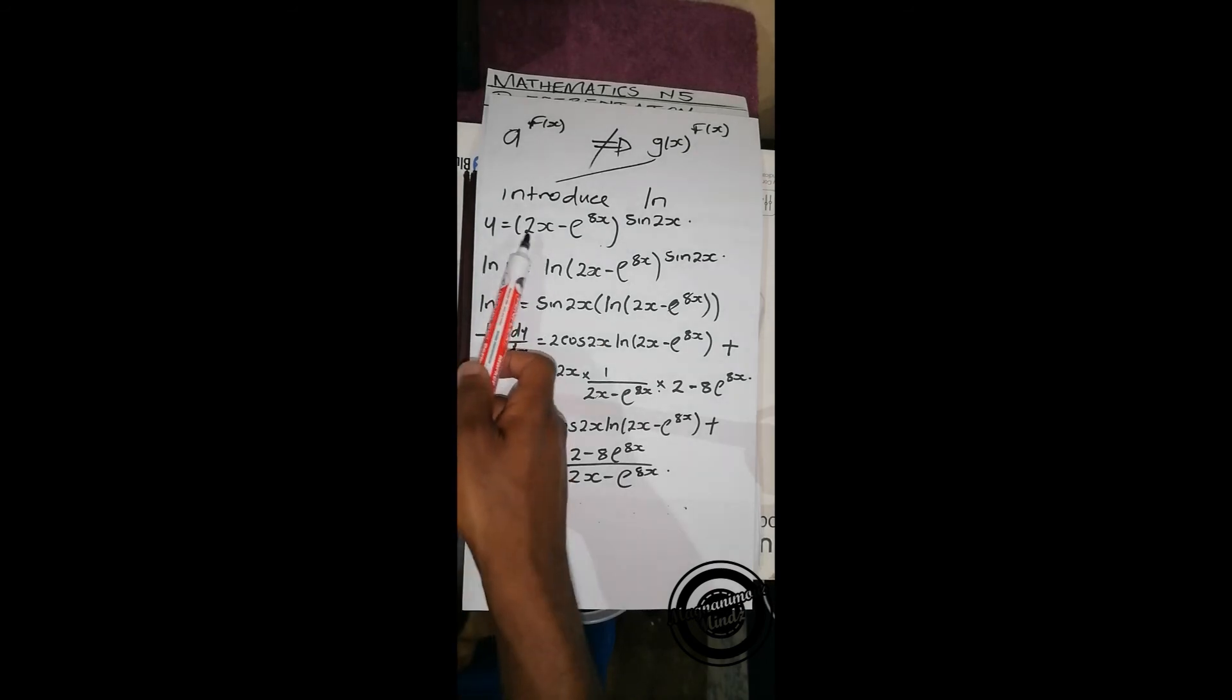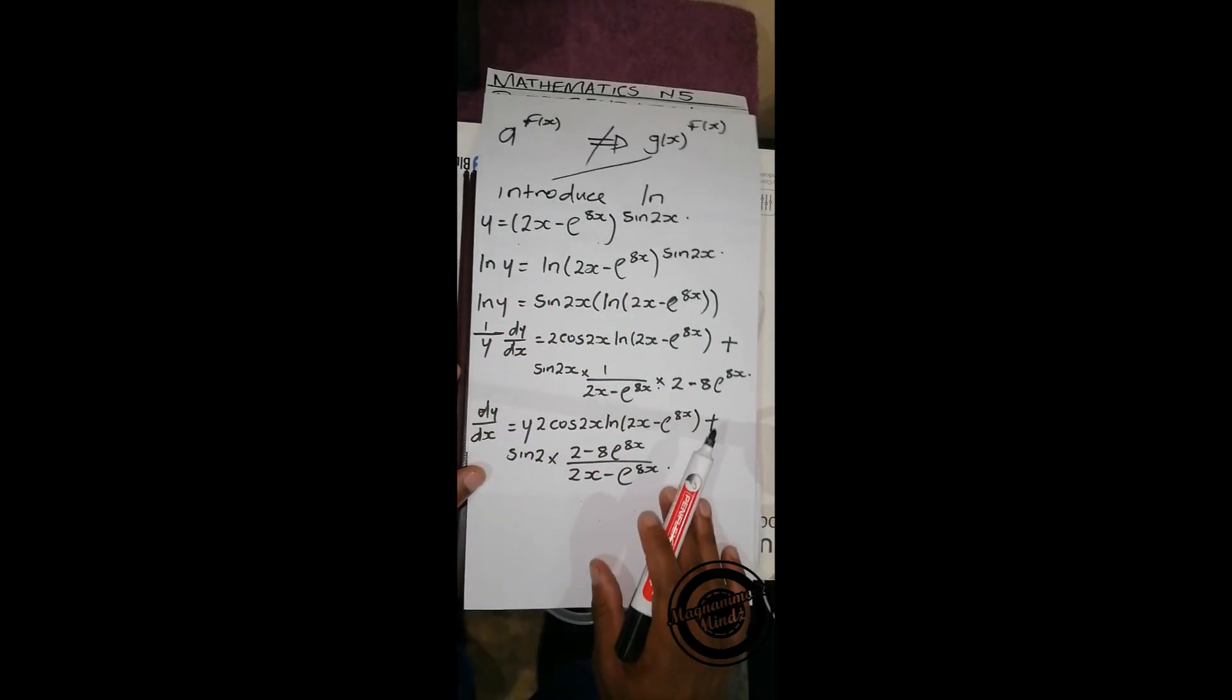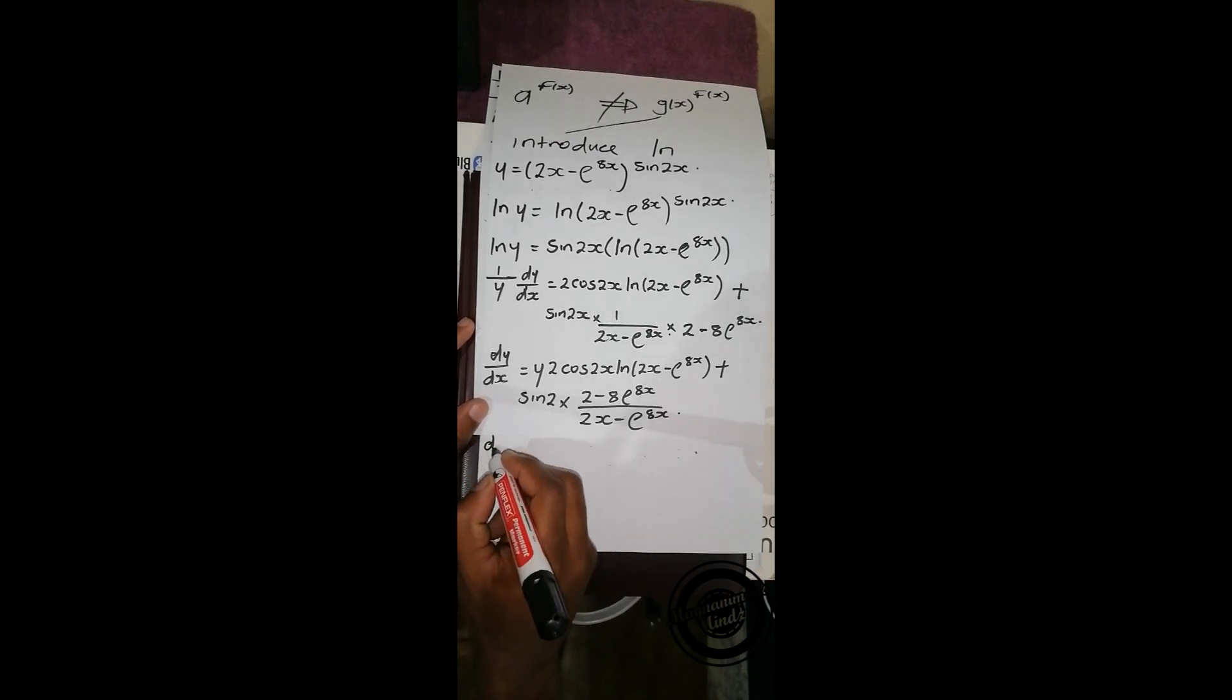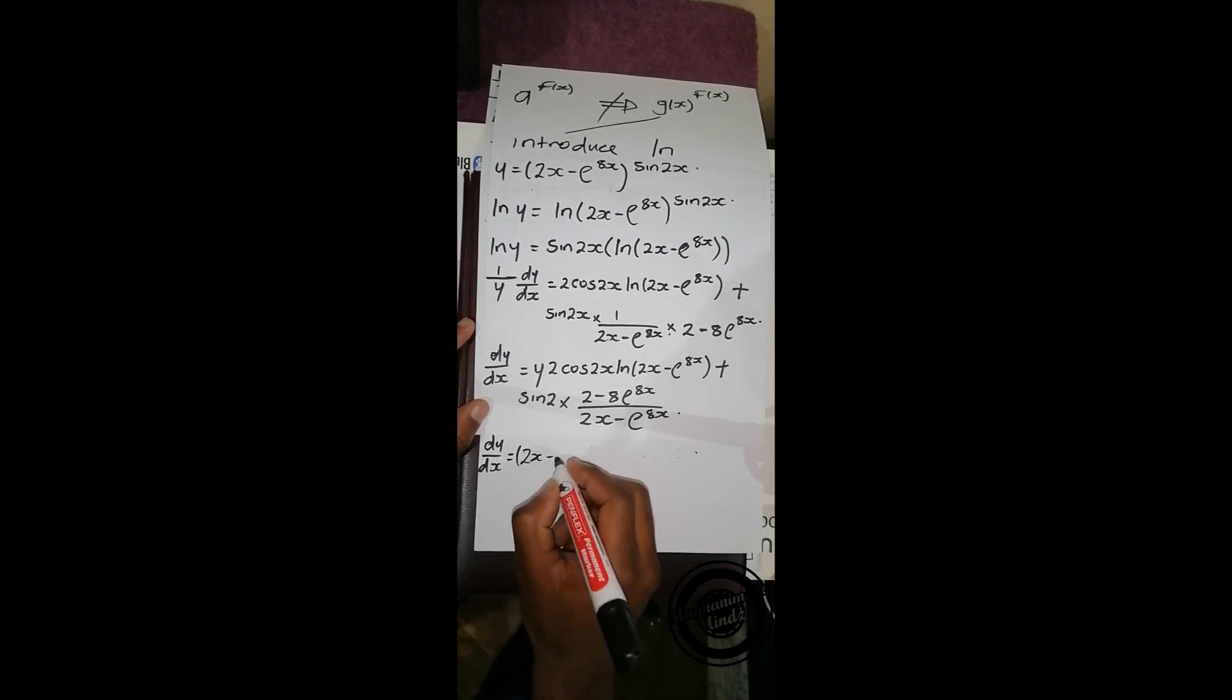So to do that, we're going to have dy/dx equals (2x - e^(8x))^(sin 2x)